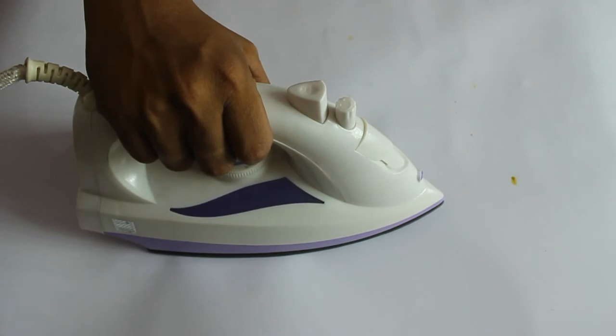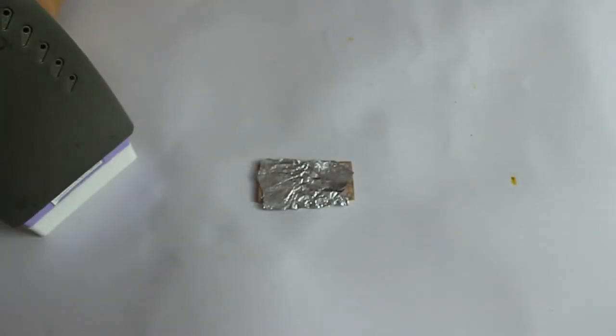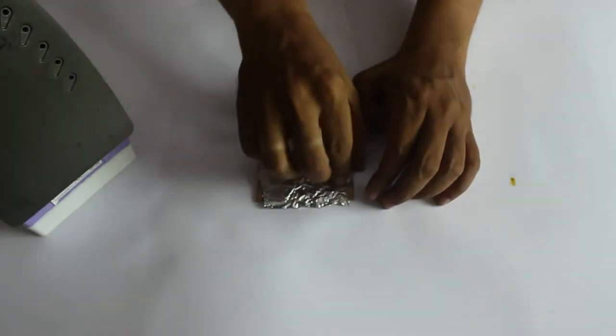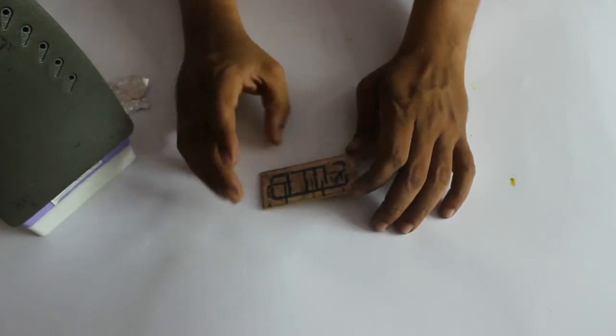After 10 minutes, take out the iron box and remove the aluminum foil. It will be very hot, be careful and take precautions.